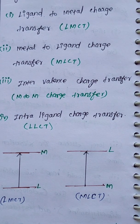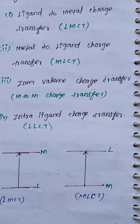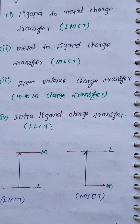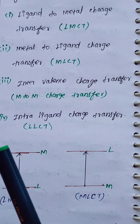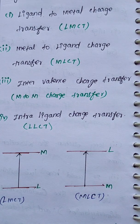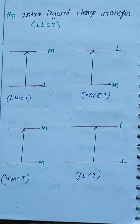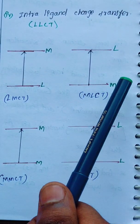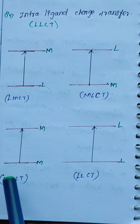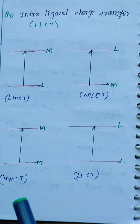Intervalence charge transfer means metal to metal charge transfer — compounds that contain two or more metal centers. These compounds are colored compounds. The four types are summarized as: LMCT — ligand to metal charge transfer; MLCT — metal to ligand charge transfer; third — metal to metal charge transfer; and fourth — ligand to ligand charge transfer.